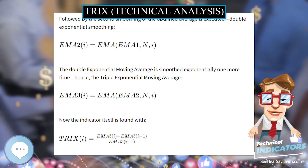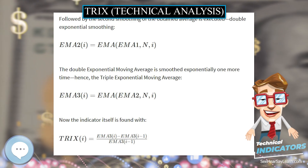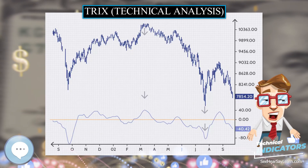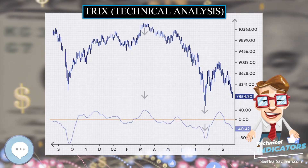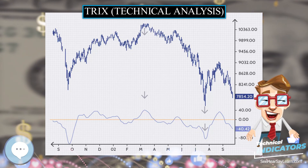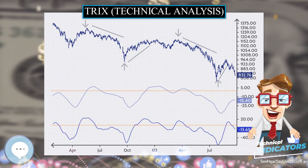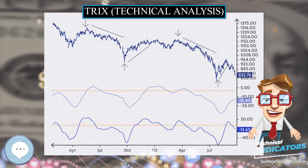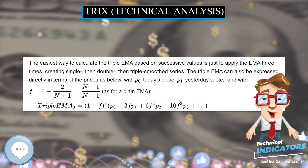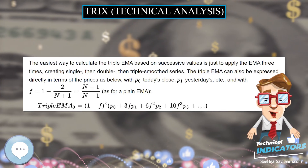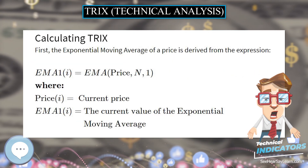As with a plain EMA, the coefficients are the triangle numbers n(n+1)/2. In theory the sum is infinite, using all past data, but since f is less than 1, the powers f^n become smaller as the series progresses. They decrease faster than the coefficients increase, so beyond a certain point the terms are negligible.